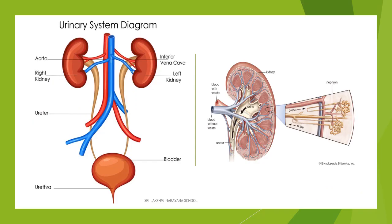Let's look at a detailed description of the kidneys. Kidneys are bean-shaped, dark red in color, and placed behind the abdomen. They filter the blood to remove waste in the form of urine. The kidney is made up of millions of nephrons, which are the structural and functional units of the kidney.